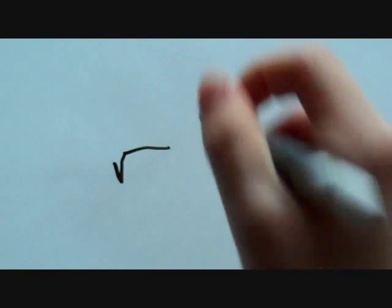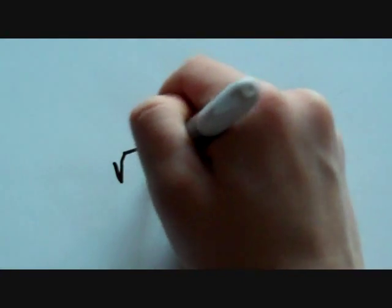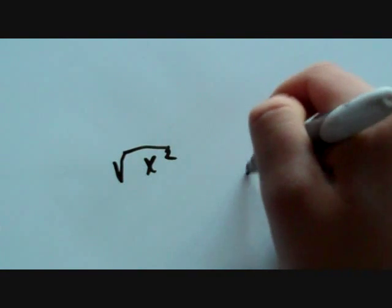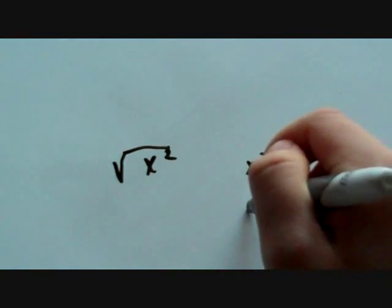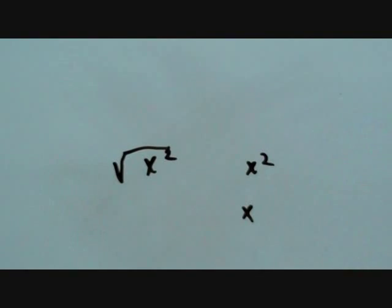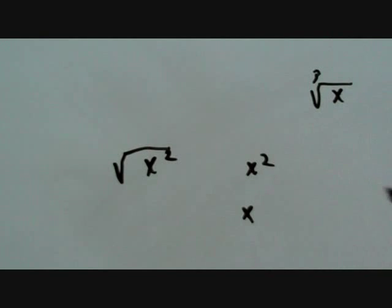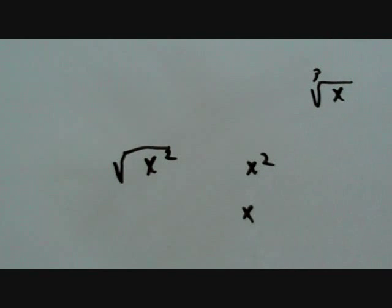A square root is the way to figure out the opposite of a square. So this figures out whatever a number squared is, it figures out the original number. And if it's got a little 3 next to it, it will figure out the original number of a number that is cubed.